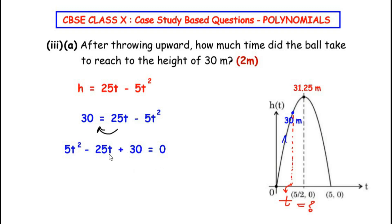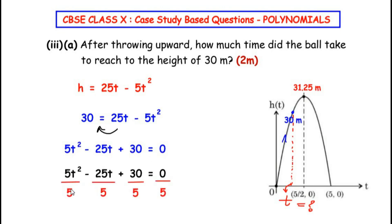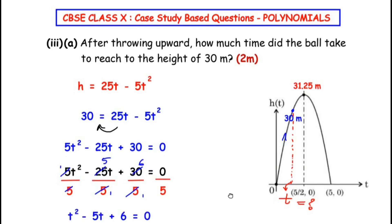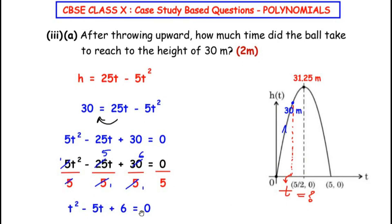The numbers 5, 25, and 30 are all divisible by 5, so we divide each term by 5: 5t²/5 - 25t/5 + 30/5 = 0. This simplifies to t² - 5t + 6 = 0.